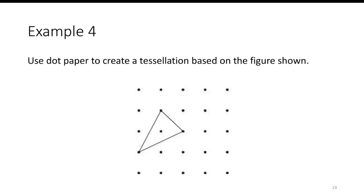Let's use the dot paper here to create a tessellation based on the figure that's being shown. We have a triangle where one edge length is going from one dot to the diagonal to another dot, and then you have another dot that is a couple steps over. One way we can do this is let's repeat this dot here and continue over here.